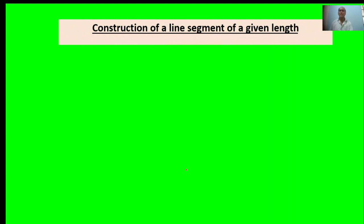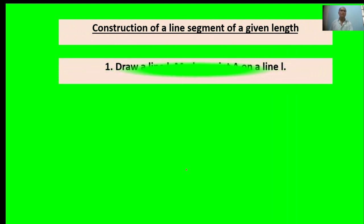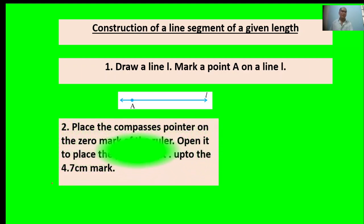Construct a line segment of a given length. First point: Draw a line L. Mark a point A on your line. Second point: Place the compass's pointer on the zero mark of the ruler. Open it to place the pencil point up to the 4.7 marks.